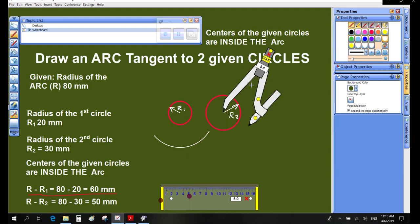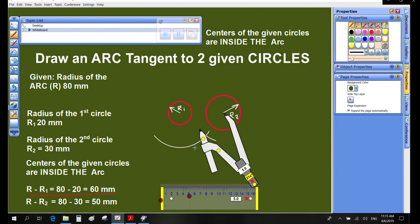Similarly, with center of the circle of radius R2, draw an arc of radius R minus R2, such that it intersects the first arc.